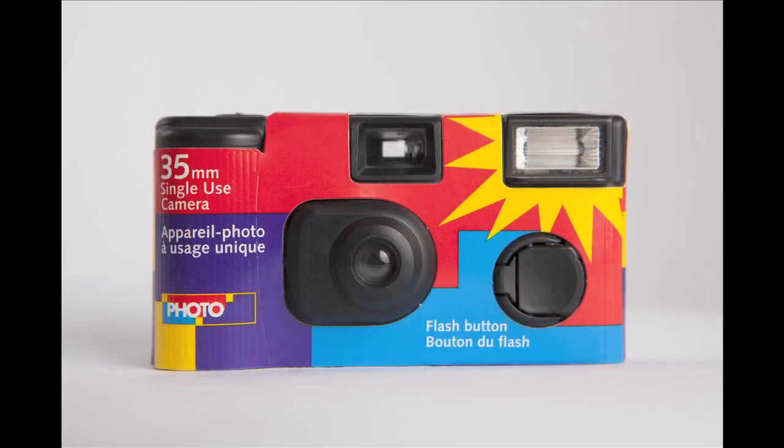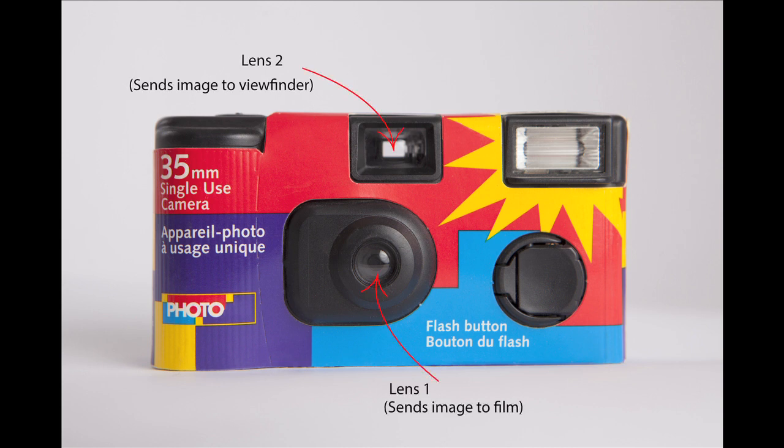Before the SLR, cameras had two different paths for the light to travel down — one being the main lens, the other being a separate lens leading directly to the viewfinder. This is essentially a double lens system: one for the actual photo and a second giving an approximation of the photo being taken. These types of cameras are often referred to as viewfinder or rangefinder cameras.